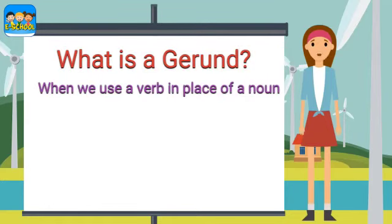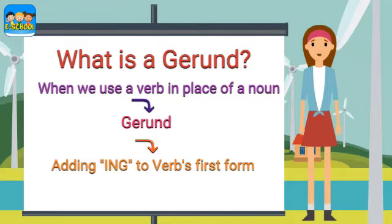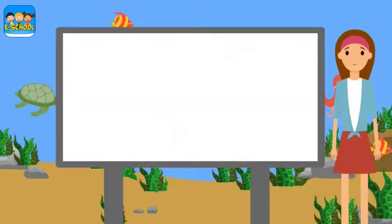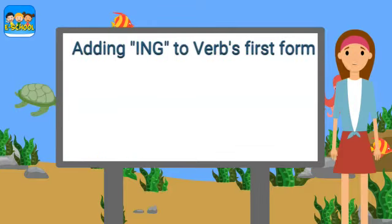What is a gerund? When we use a verb in place of a noun, it is called a gerund. How can we form a gerund? Add -ing to a verb in its first form and use it as a noun.